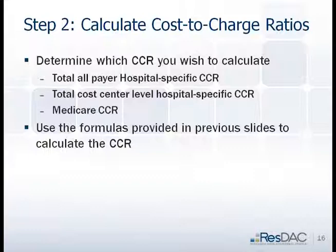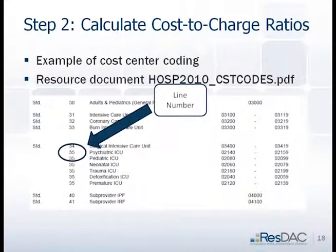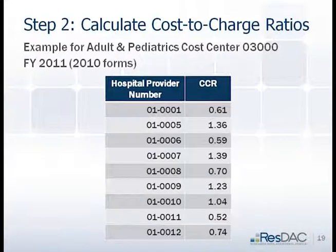Use the formulas to calculate the cost-to-charge ratio. Worksheet C, Part 1 — the favorite worksheet — is where you would find costs and charges. The resource document Hospital Cost Codes is also helpful in determining cost center levels and the locations of where to find them, providing the line numbers. Examples pulled from fiscal year 2011 data show provider numbers with calculated cost-to-charge ratios for the adult and pediatrics cost center, and they vary considerably by hospital.